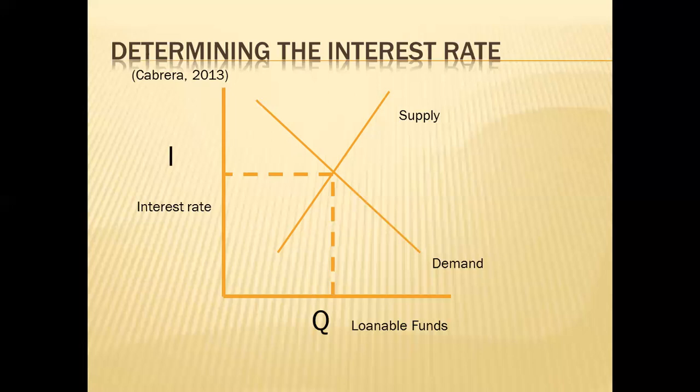The higher interest rate means that if you are going to borrow money, you are going to pay more. So in order to prevent that, you are going to save money. Therefore, as the interest rate rises, the quantity of funds supplied to the loanable funds market will increase.